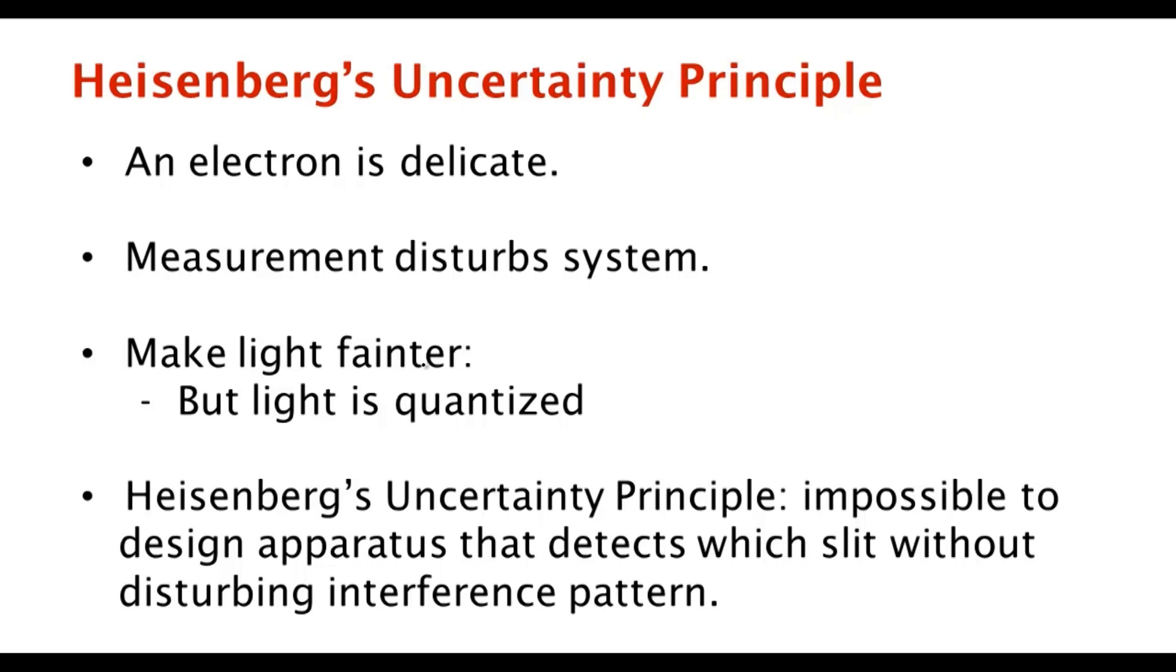You can make the light fainter and fainter to try to not disturb the system, but the fainter you make the light, the less your chance of actually performing a measurement. So there is no free lunch: if you're going to measure—if you get an outcome—then you've disturbed the system.